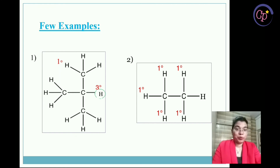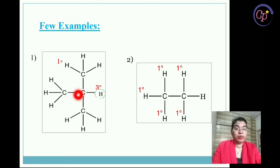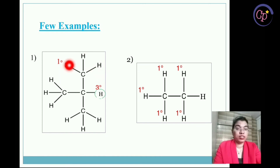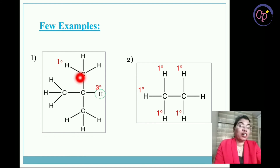In these examples, for the first structure the circled hydrogen atom is showing three degree because the carbon to which it is attached is again attached to three other carbon atoms. That means the central carbon atom is showing three degree, so the hydrogen attached to it is also tertiary hydrogen. For the rest of the hydrogens, they are showing one degree because the carbon to which they are attached is attached to only one other carbon atom — so those hydrogens have primary one degree structure.